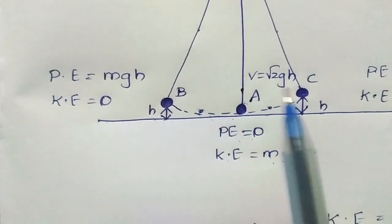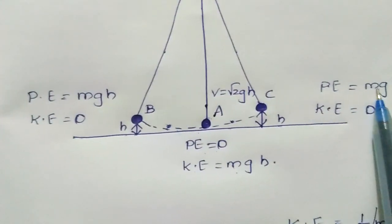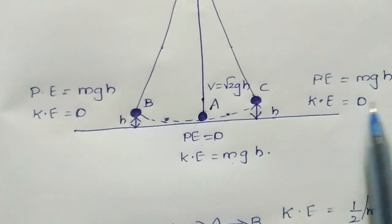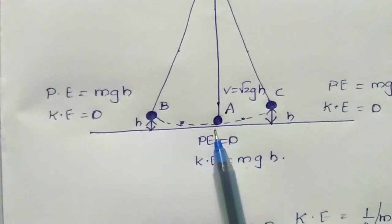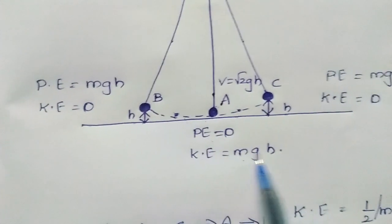At points B and C, the potential energy will be mgh and kinetic energy will be 0. And at point A, the potential energy will be 0 and kinetic energy will be mgh.